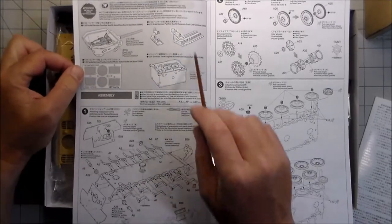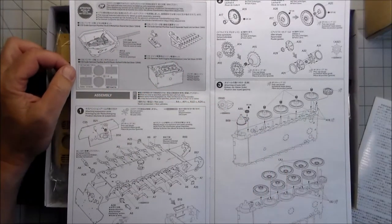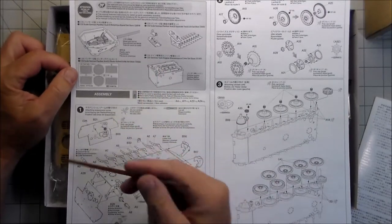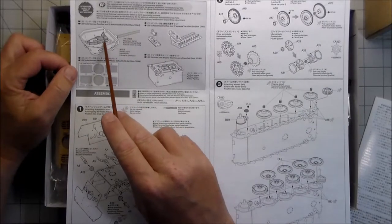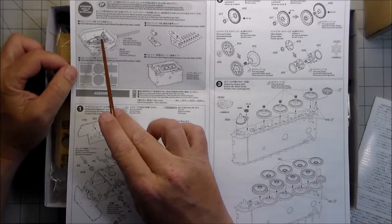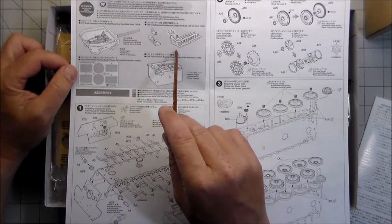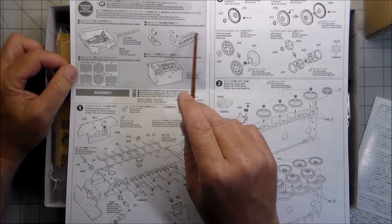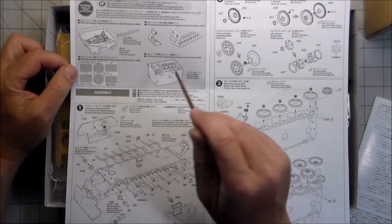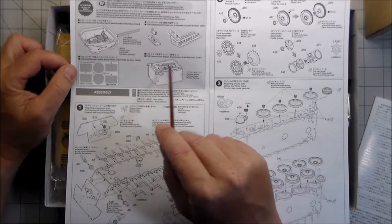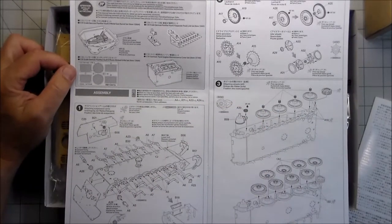This is the first time I've really seen this in Tamiya instructions - it shows some of the aftermarket items that you can get. Such as a metal gun barrel and detailed breech (set number 12664), a track set (12665) with individual link tracks, the photo-etch grill set, and the German tank engine maintenance crew set which comes with this big drop-in engine component.